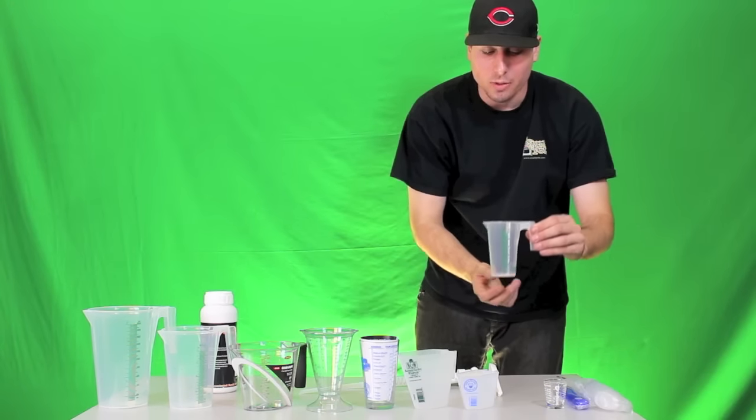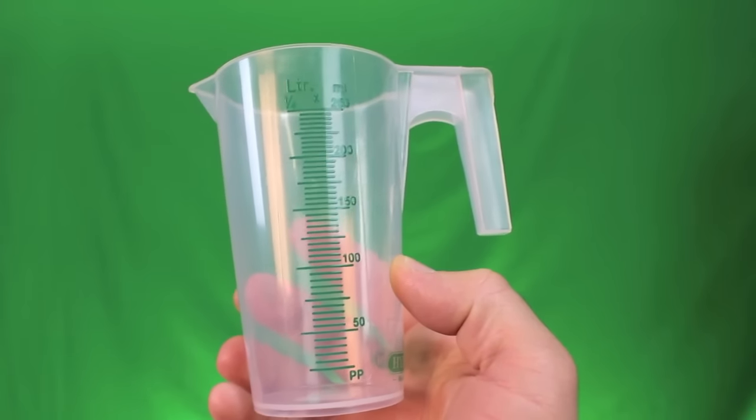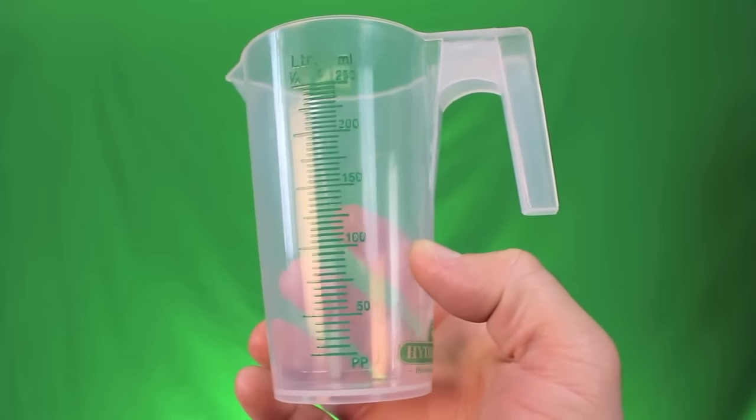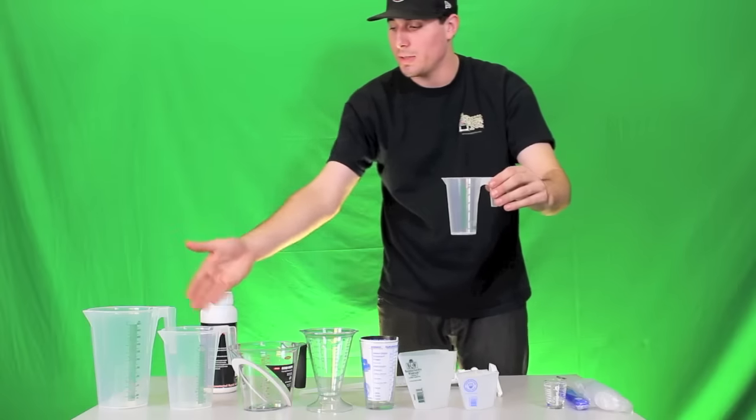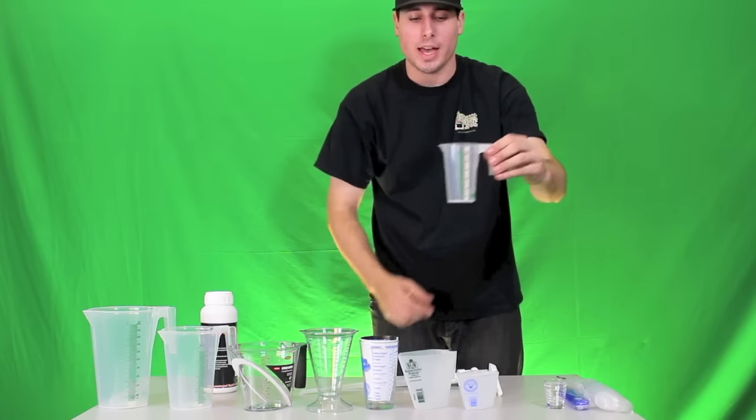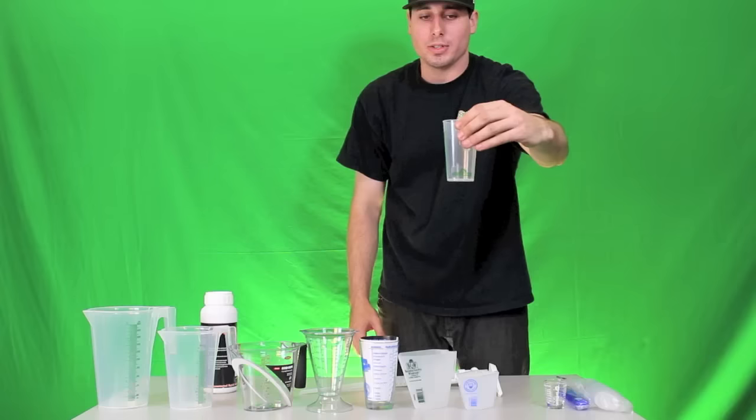Definitely the smallest of the ones that still have the handle is going to be the Hydrofarm 250 milliliter measuring device. This one is very similar to this style in that it has the handle on the side with the spout, but it's much smaller as you can see.